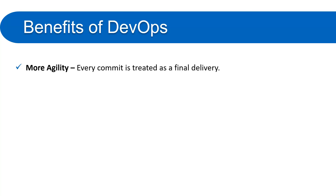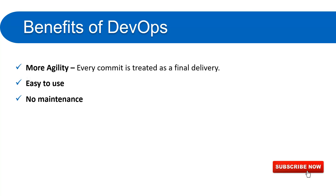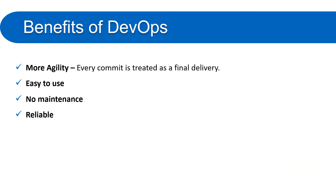Sixth, more agility — every commit is treated as a final delivery. In agile you work in sprints and deliver a valuable product at the end. With DevOps, if you break it down further so that all steps are taken care of on every single commit, it brings even more agility to the development process. Seventh, easy to use — DevOps is very easy to learn and very simple to use. Eighth, no maintenance cost. Ninth, reliable — you can trust DevOps to always deliver quality products and services.